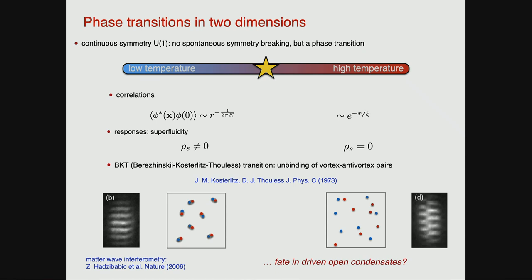To set the stage, I want to remind you of what is well known about phase transitions in equilibrium two-dimensional systems with a continuous symmetry — that's an important ingredient. We want a continuous symmetry; for example, the simplest is a U(1) symmetry. We discussed spontaneous symmetry breaking, which is only operative in sufficiently high spatial dimension. Two dimensions is exactly the case where we cannot have spontaneous symmetry breaking due to the Mermin-Wagner theorem. The presence of gapless modes forbids stable condensation, and these gapless modes lead to the destruction of a condensate. Rather, what you see at low temperature is what is known as an algebraically or quasi-long-range ordered phase, characterized by an algebraic decay of the correlation function.